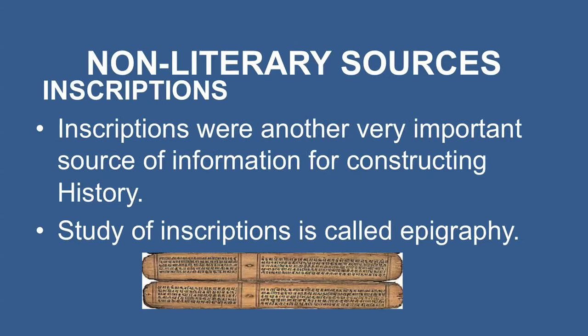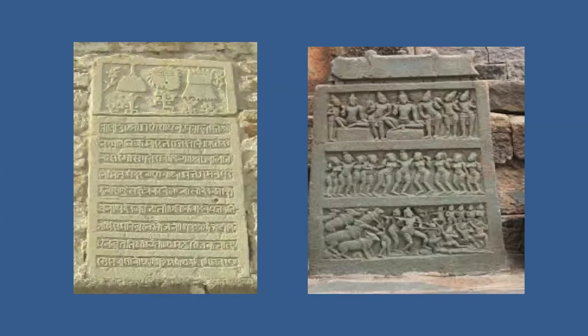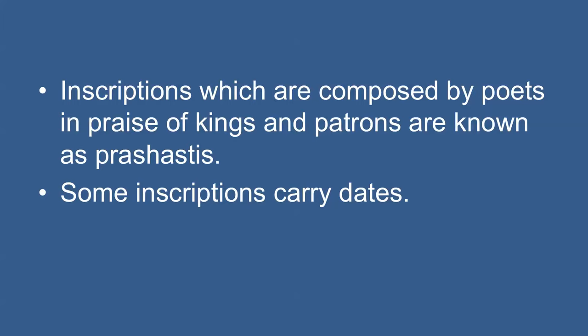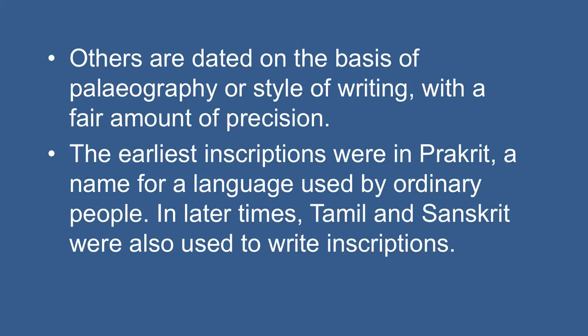Inscriptions were another very important source of information for constructing history. Inscriptions are permanent writing engraved on hard surfaces such as stone, metal, or terracotta. The study of inscriptions is called epigraphy. The earliest inscriptions were written on stone and usually recorded the achievements, activities, and ideas of those who got them inscribed. Those inscriptions composed by poets in praise of kings and patrons are known as prashasti. Some inscriptions carry dates; others are dated on the basis of palaeography or style of writing. The earliest inscriptions were in Prakrit, a language used by ordinary people. In later times, Tamil and Sanskrit were also used.